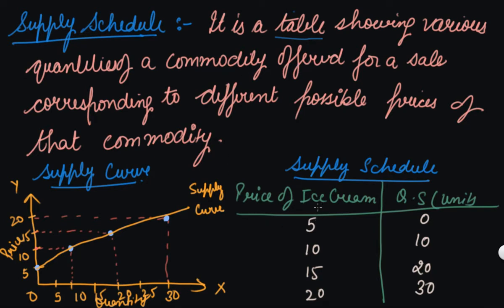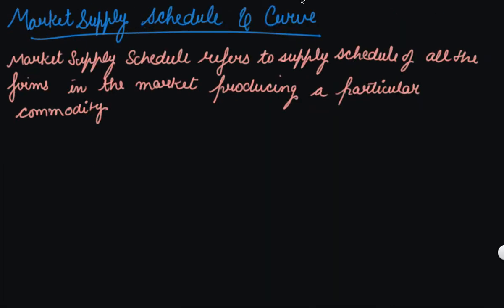This is the schedule of an individual, because you are given the price and a single quantity supplied. So this is the schedule for an individual producer — this is an individual supply schedule, and this is an individual supply curve. I hope you have now understood the individual supply schedule and individual supply curve.